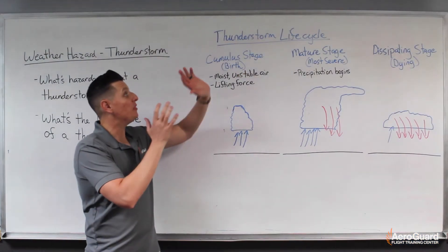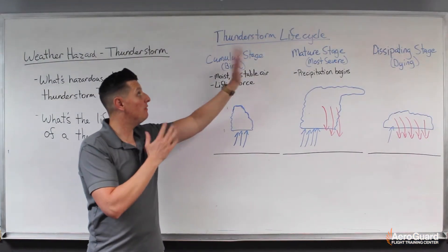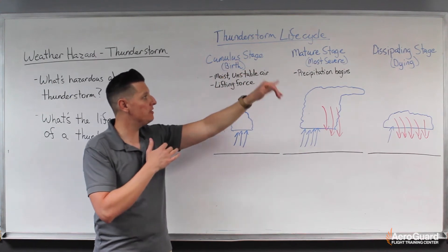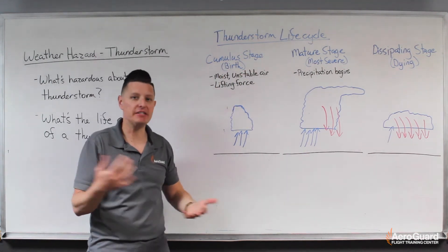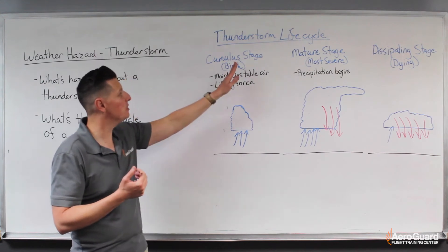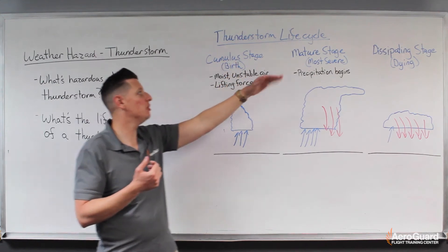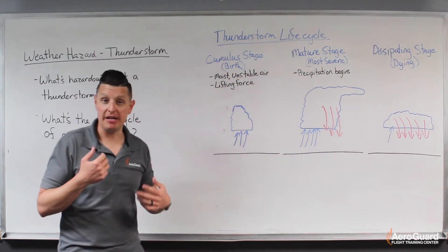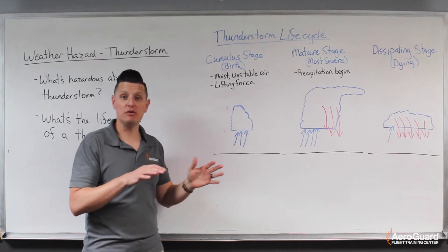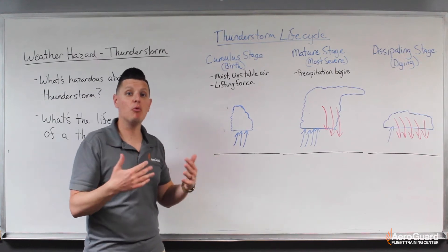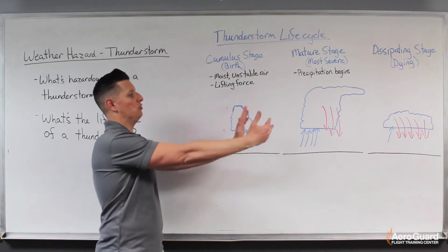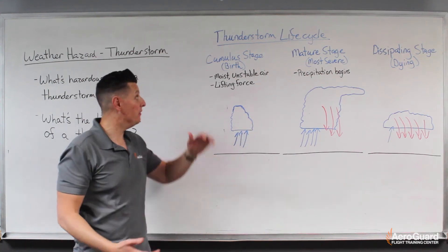Typically when we talk about the life cycle of a thunderstorm, we break it into three different stages or phases of its life. We have the cumulus stage, the mature stage, and the dissipating stage. I want to dive into each of those and talk about what's happening as we transition from the beginning to the end.